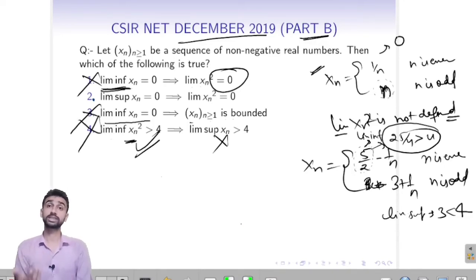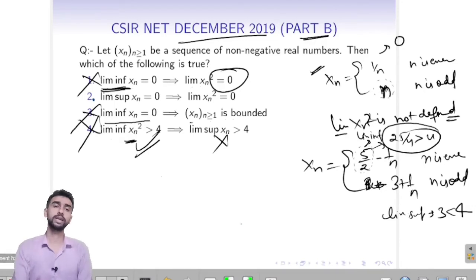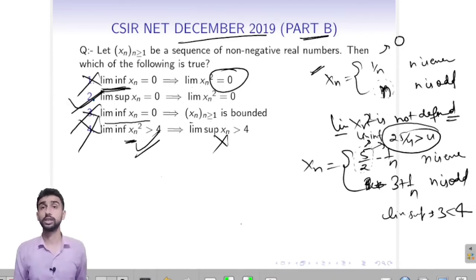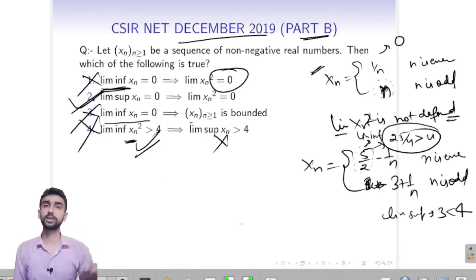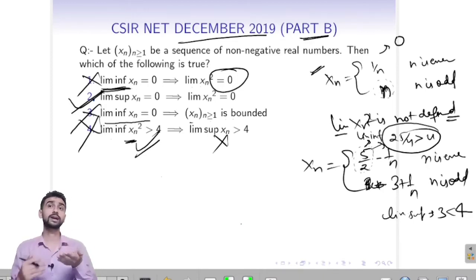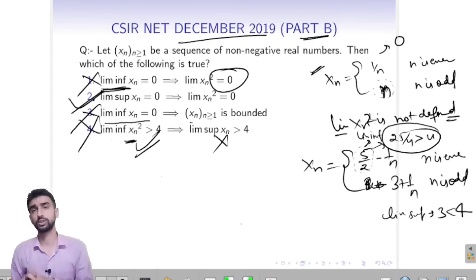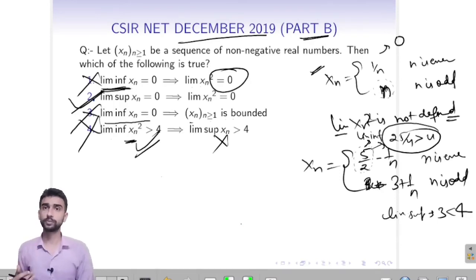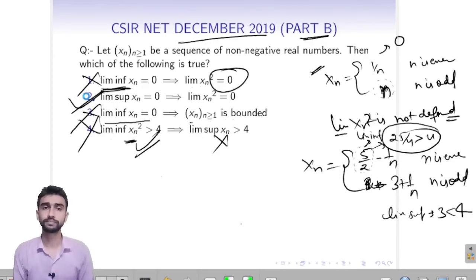When I have discarded three options — 1, 3, and 4 — then obviously the second option will be correct. When you can't directly find the correct option, you can try to discard the options. It is very useful in Part B questions. If you can discard three options, then the fourth option will always be correct.